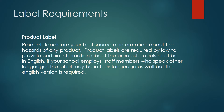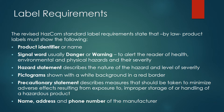Product labels are your best source of information about the hazards of any product and are required by law to provide certain information. Labels must be in English; if your school employs staff members who speak other languages, the label may be in their language as well, but the English version is required. By law, product labels must show: a product identifier or name; a signal word, usually 'danger' or 'warning,' to alert the reader of health, environmental, and physical hazards and their severity; a hazard statement describing the nature and level of severity; pictograms shown with a white background and a red border; a precautionary statement describing measures to minimize adverse effects from exposure, improper storage, or handling; and the name, address, and phone number of the manufacturer.